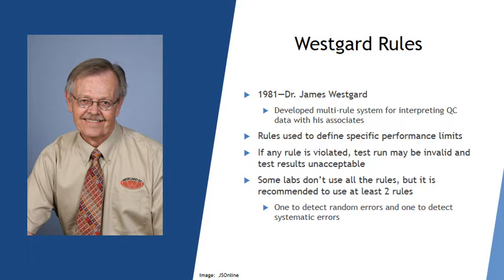Just like everything in life, there are rules to follow for creating and interpreting LJ charts. In 1981, Dr. James Westgard developed a multi-rule system for interpreting QC data. His rules define specific performance limits for QC — if any of the rules are violated, the run might be invalid and you should hold patient results until you can investigate further. Some labs don't use all the Westgard rules; it sometimes depends on how many control levels you're running. It is recommended that you use at least two rules, with one detecting random errors and one detecting systematic errors.